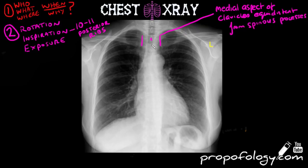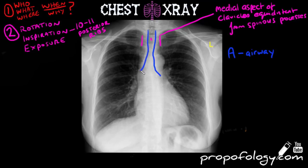Then you're going to adopt an A, B, C, D, E approach to interpreting chest x-rays. A obviously stands for airways, so we're talking about the trachea and its branches — the bronchi and any airways that you can see distal to that. You're going to trace it, look down either side, and look in both lung fields as well.